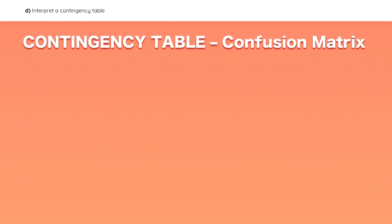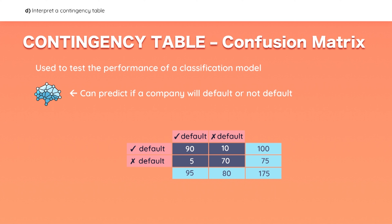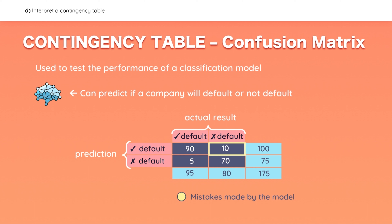There is a special kind of contingency table called a confusion matrix, and it is used to test the performance of a classification model. For example, suppose that we have a model that can predict if companies will default on their bond payments, and we want to test the accuracy of this model. The confusion matrix compares the model's predicted defaults with the actual defaults. The model predicted that 100 companies would default, but only 90 of those actually defaulted — so the model made a mistake in 10 cases where there was no actual default. It also made a mistake in 5 cases where it predicted no default but there actually was one. The confusion matrix can help you visualize the accuracy of a model.